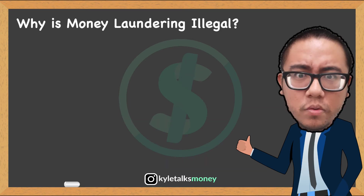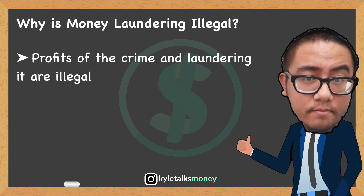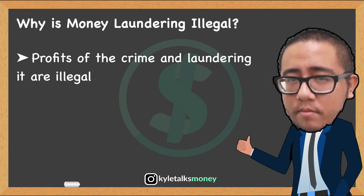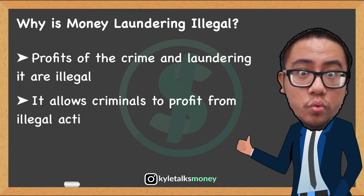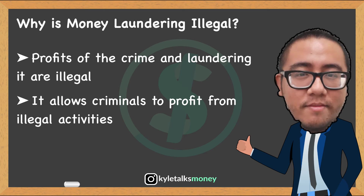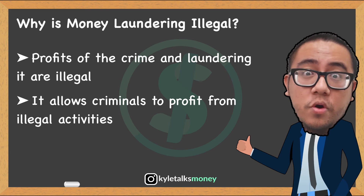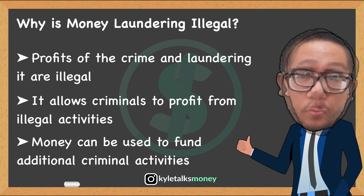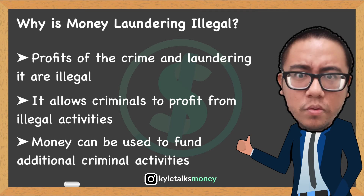So why is money laundering illegal? Both the proceeds of a crime and the act of laundering money are illegal. Money laundering is a white collar crime; generally the maximum sentence is 20 years in prison and a fine. Money laundering is against the law because it allows criminals to profit from illegal activities. The cash that is laundered came from a crime, so the money was illegally obtained. Another concern is that laundered money may also be used to fund additional criminal activity.